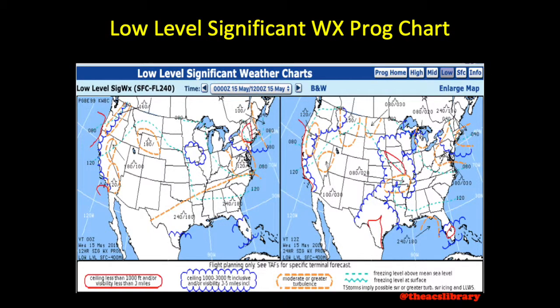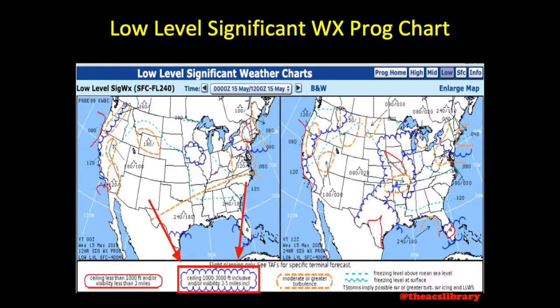As mentioned earlier, prog charts depict weather flying category as either IFR, marginal VFR, or VFR. IFR conditions — either ceilings below 1,000 feet AGL and/or visibility below 3 statute miles — are depicted outlined in red. Areas of marginal VFR conditions, or conditions better than IFR but not quite classifying as VFR, are outlined in a scalloped blue line that looks like a child's drawing of a cloud.